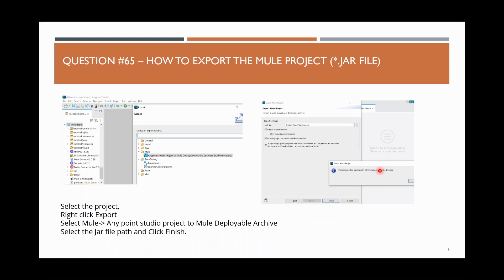Once you provide the path and click finish, it will be exported successfully. To summarize: go to your project, right-click, click export, choose 'Anypoint Studio project to Mule deployable archive', select the JAR file path, and click finish.